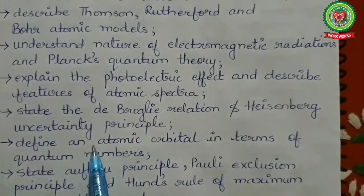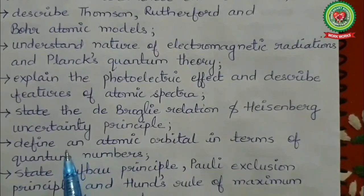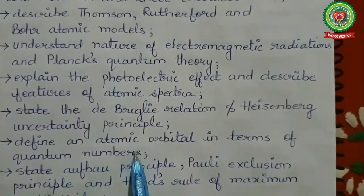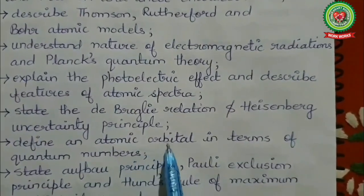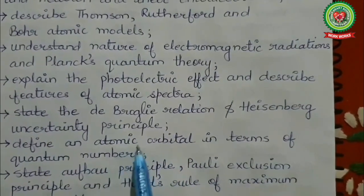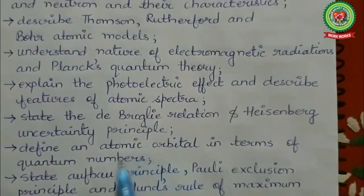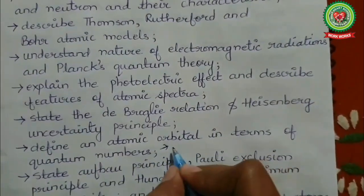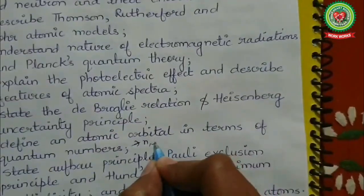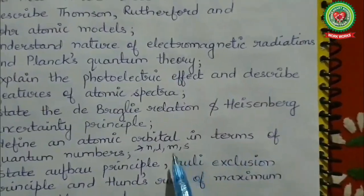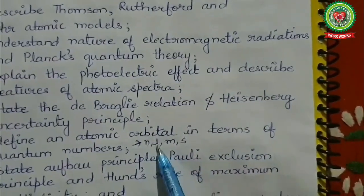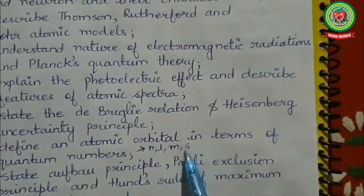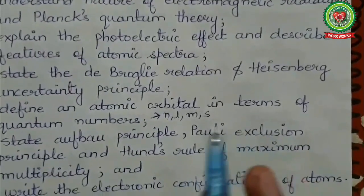Afterwards, the main new part of the chapter is to define an atomic orbital in terms of quantum numbers. Initially till 10th standard you have done orbits, but now there is a new term called orbital. The quantum numbers are n, l, m, and s — that is, principal quantum number, azimuthal quantum number, magnetic quantum number, and spin quantum number.